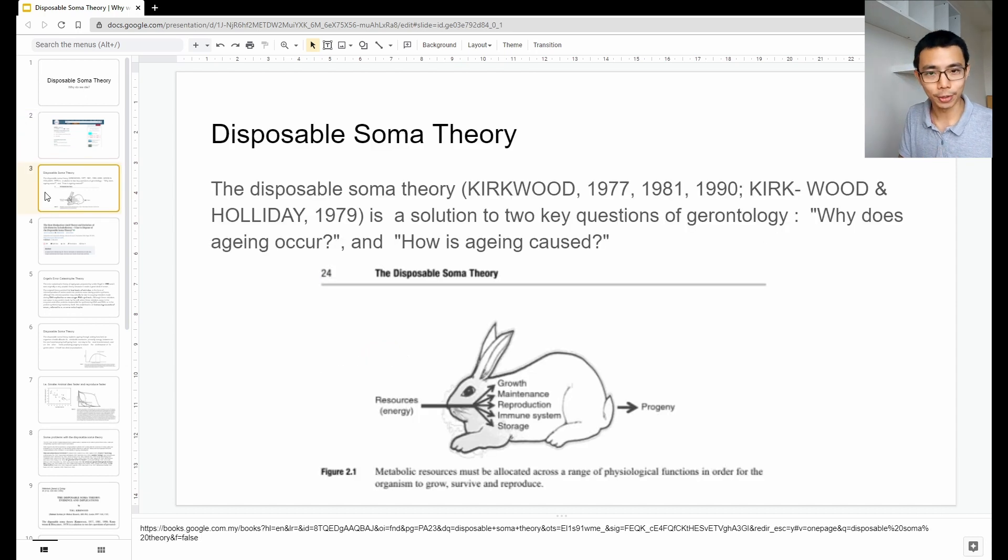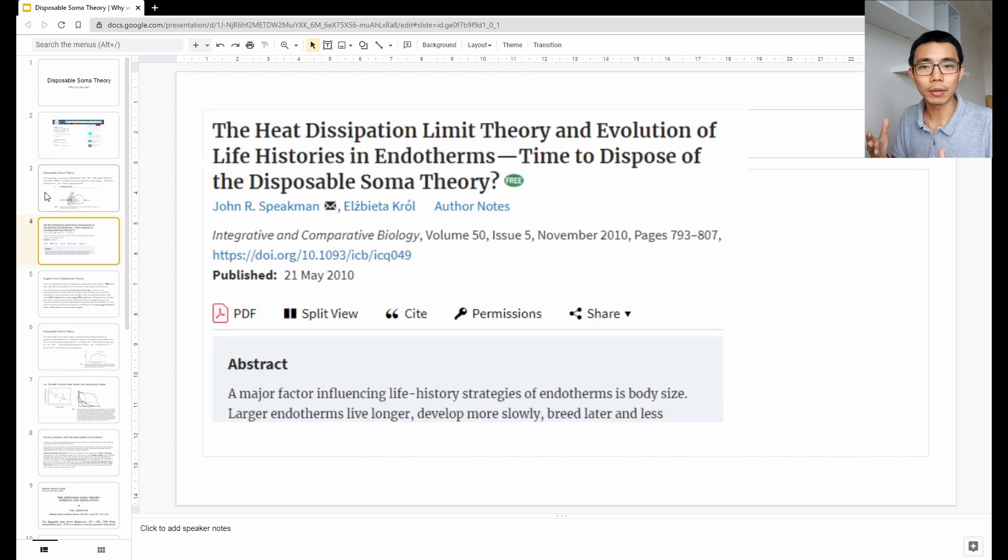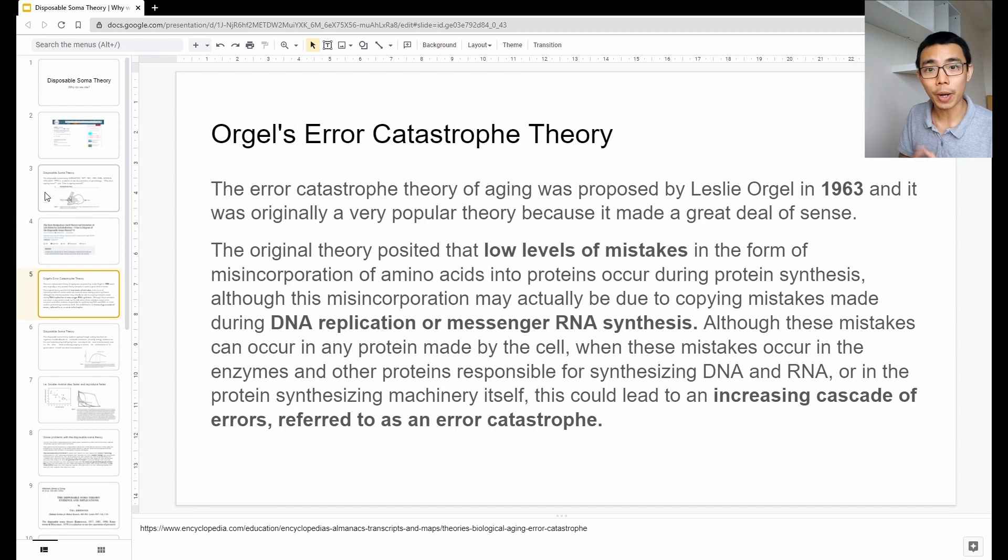And disposable soma theory basically says, for an animal or for a species overall, it is better to pass on the genetics and your body itself is actually quite disposable. So, I'll be talking more about this theory based on the paper that I found from Professor John Spickman over here because I found that he described the thing very well.